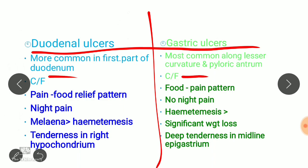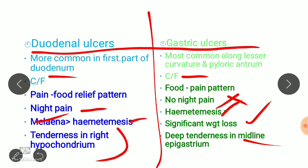Clinically, in duodenal ulcers there is a food-pain-relief pattern — pain decreases when food is taken. In gastric ulcers, food increases the pain. Duodenal ulcers also present with night pain, and melena is more common than hematemesis, with tenderness in the right hypochondrium. In gastric ulcers, there is no night pain; hematemesis is more common than melena; significant weight loss is seen; and deep tenderness in the midline epigastrium is found.